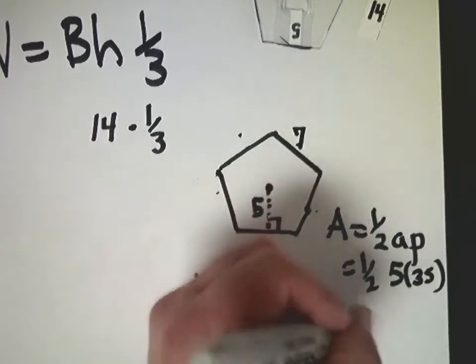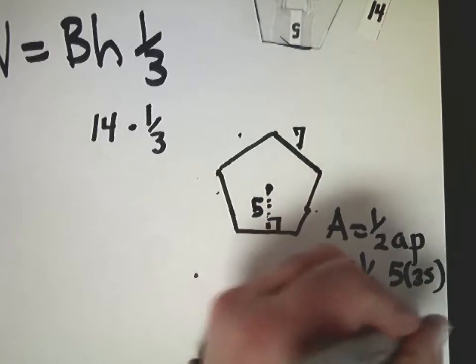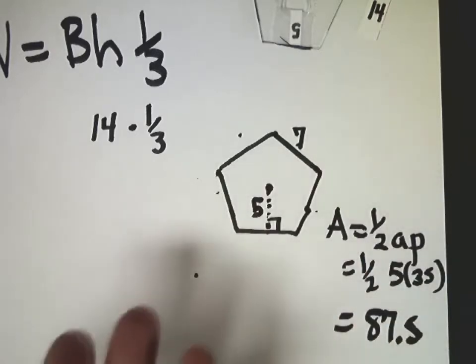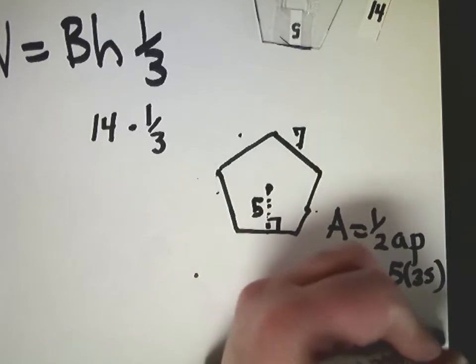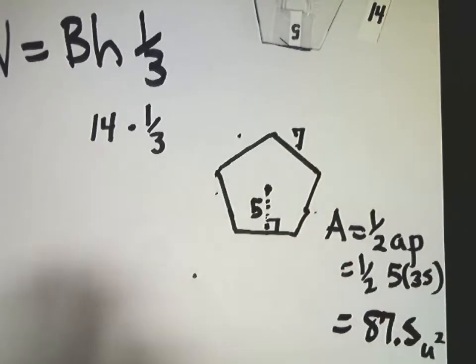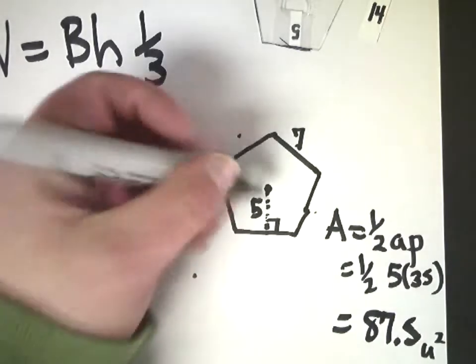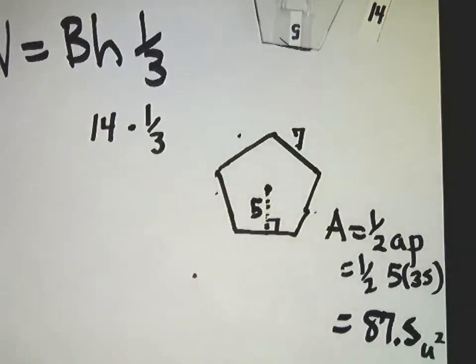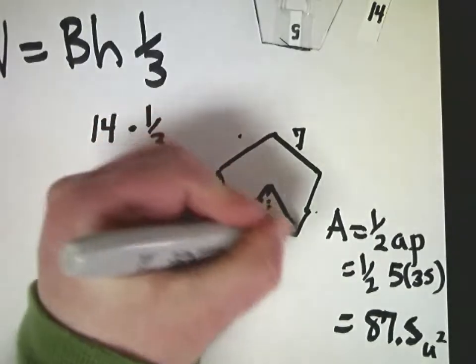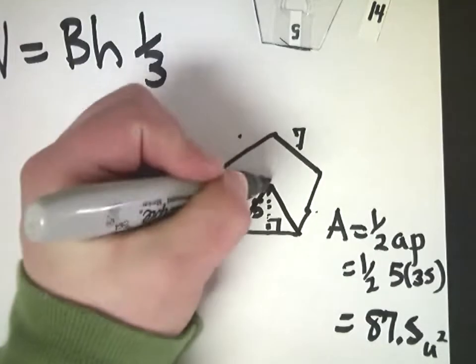And when I work this out, I get 87.5. And this would be in inches squared or whatever unit that you're going to use. So I'm going to put units squared there just so you know what it's supposed to be. The other way you can do it if you don't like or can't remember the formula is you can make triangles from the center of the figure.